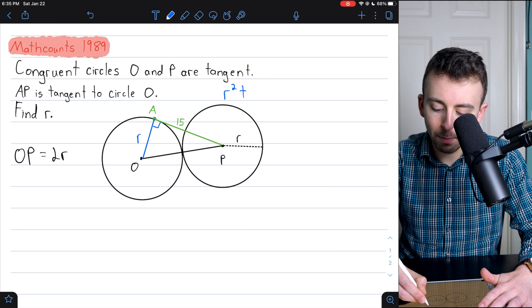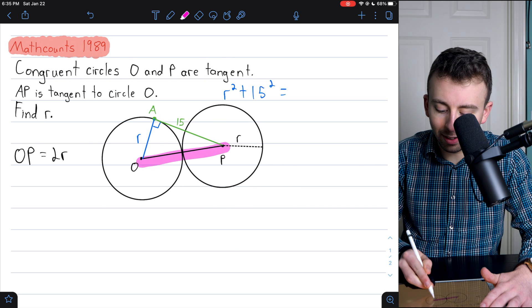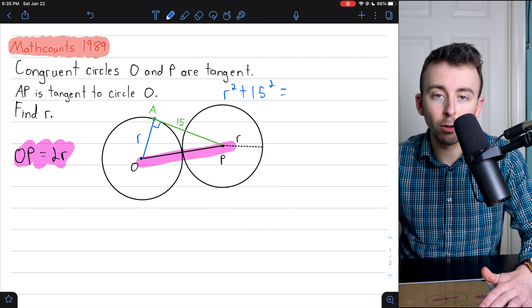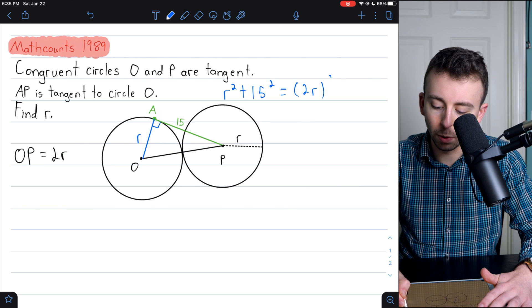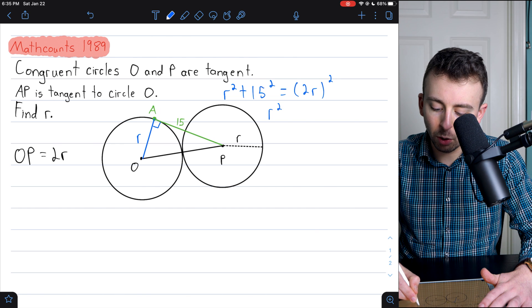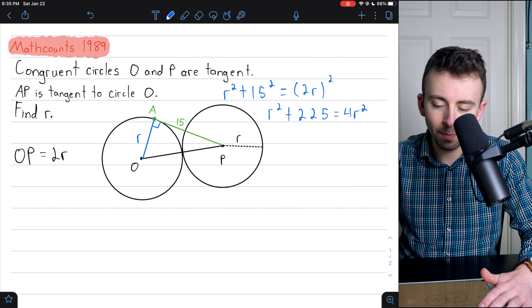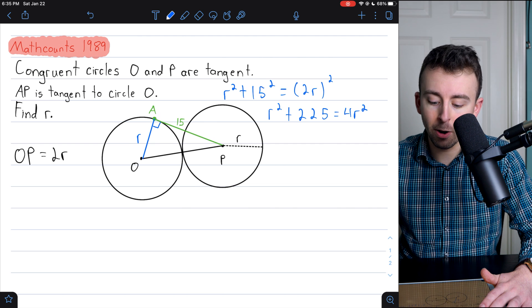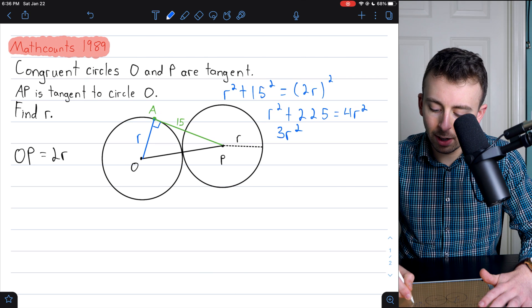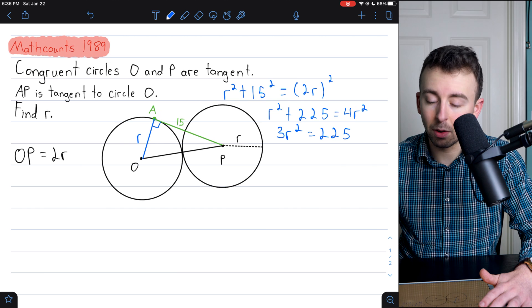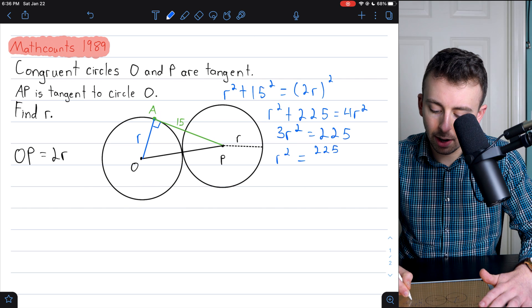So let's write this out. The sum of the squares of the legs equals the square of the hypotenuse. The legs in this case have lengths of R and 15. So R squared plus 15 squared equals the hypotenuse squared. And like we said earlier, the hypotenuse, that thing traveling between the centers of the circles, has a length of 2R. We want to be sure to square that whole thing. All right. So we've got R squared plus 15 squared is 225 equals 4R squared. We're just doing algebra now solving for R. Let's subtract R squared from both sides. So we have that 3R squared is equal to 225. Now divide everything by 3.